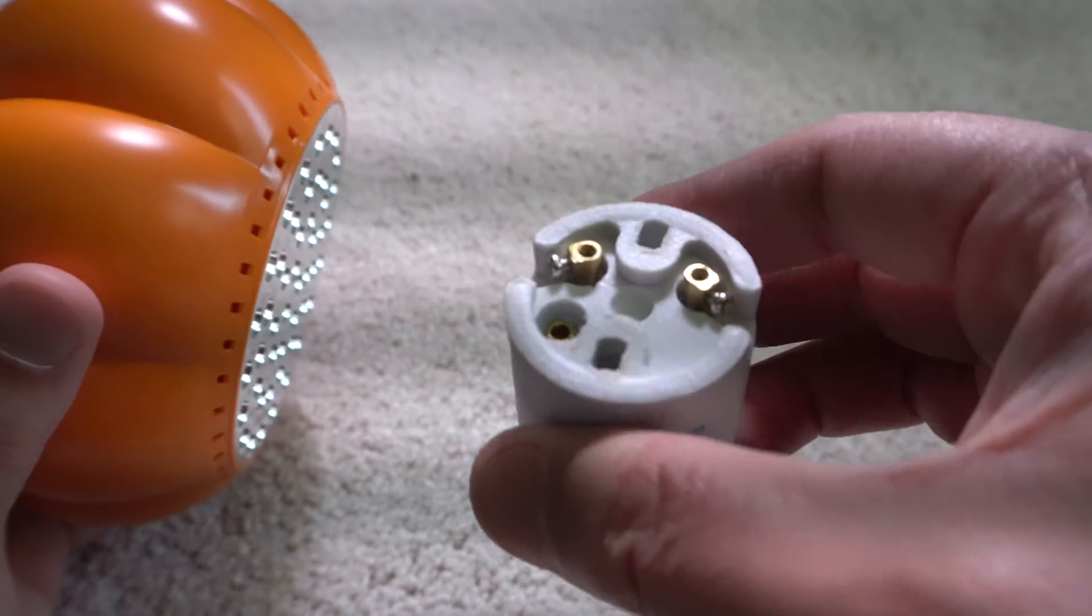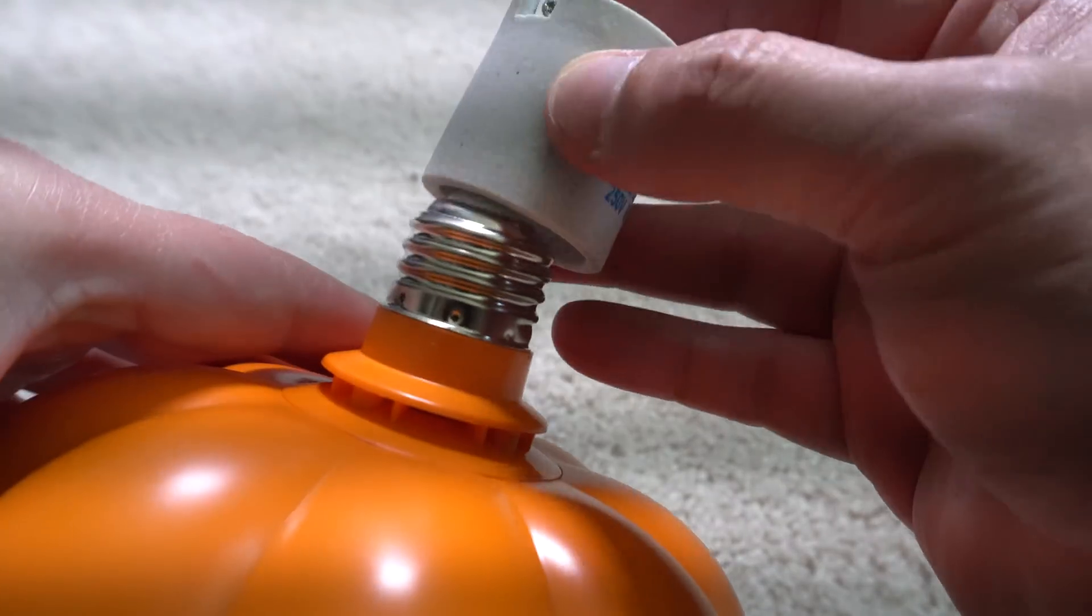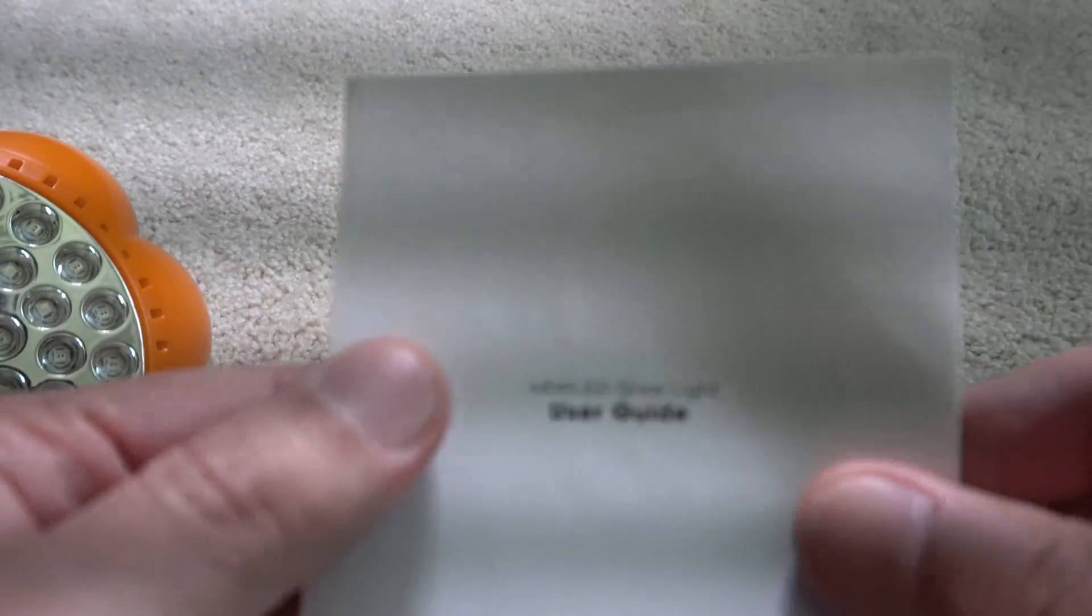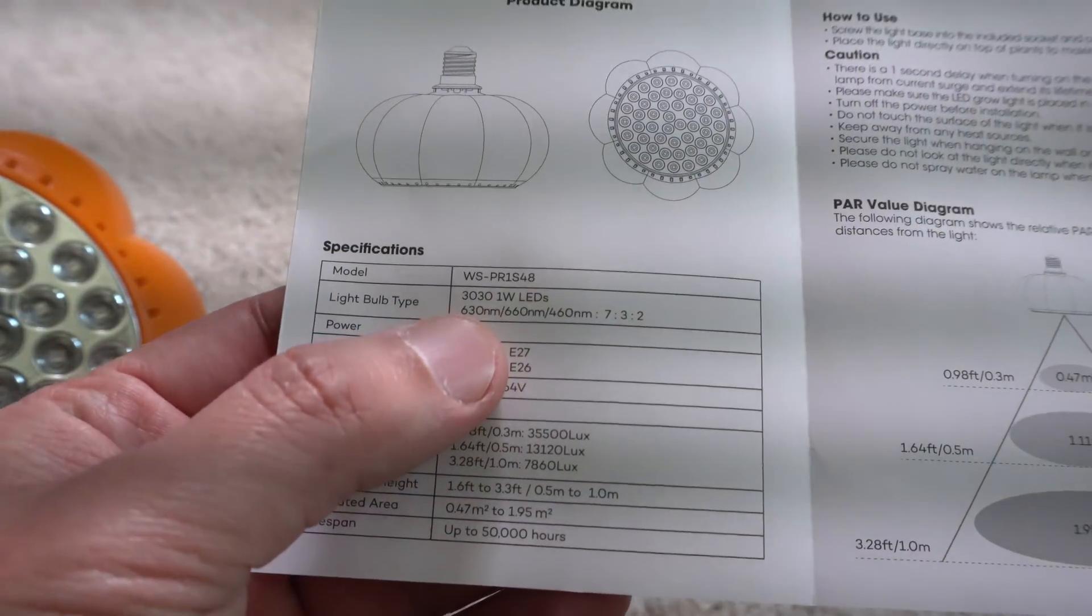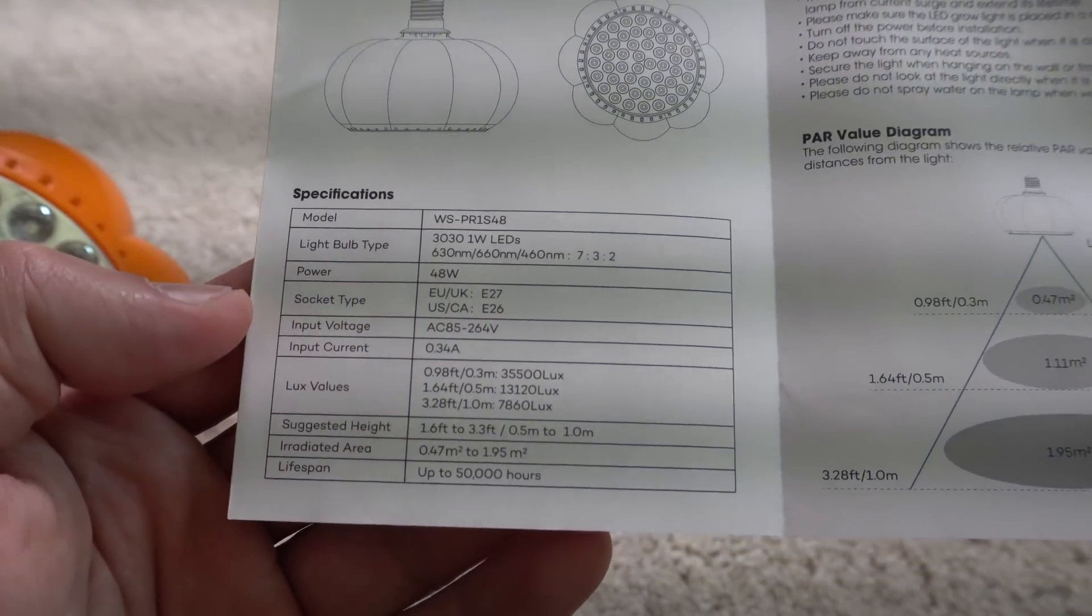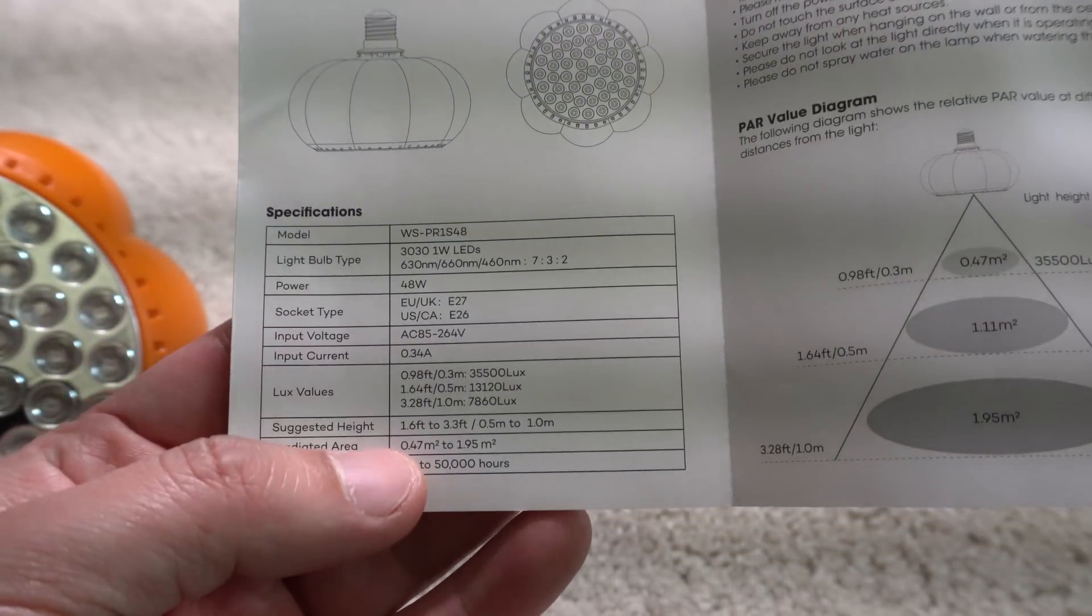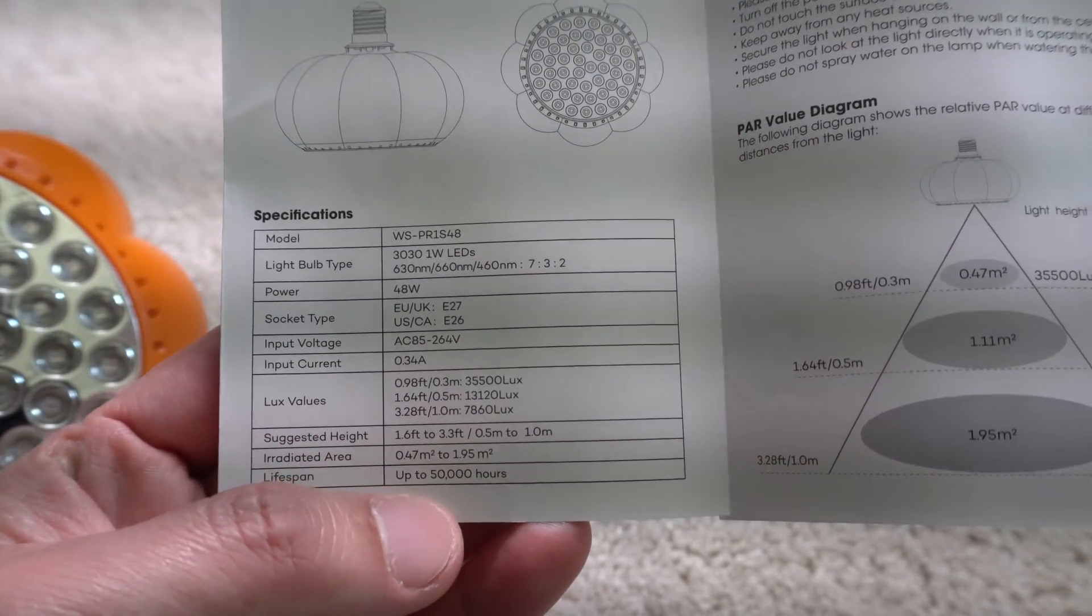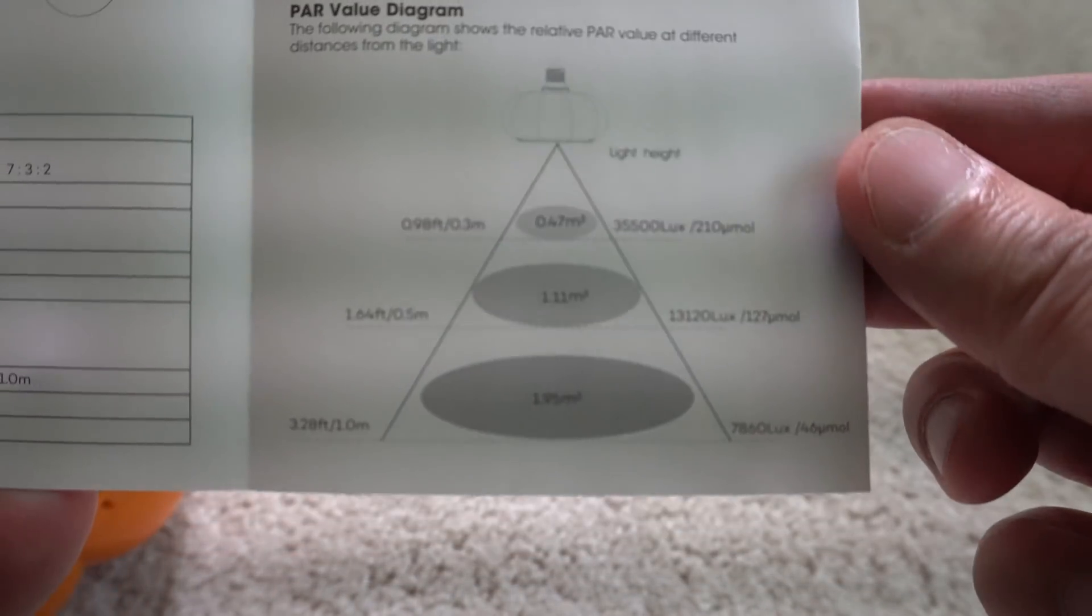And it comes with this just in case you want to do the soldering yourself so that this can hook up to the standard socket if you don't have one. And here is the little instructions. So here's some specs there. You can pause and take a look if you like. But it's suggested that you put the light about 1.6 feet to 3.3 feet. So there's a little diagram there. Alright, so let's go hook this up.